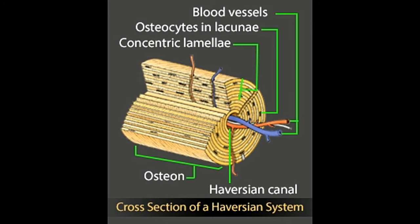The term Haversian system refers to the arrangement of cylindrical shaped structural units called osteons in compact bones. Buzzel provides a labeled diagram of the Haversian system to help you understand its structure and function.